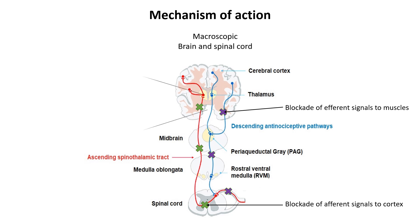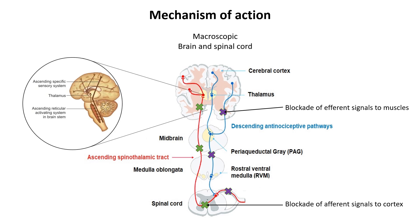Hypnosis and amnesia are mediated at the supraspinal level. Tomographic assessment of regional uptake of glucose in anesthetized volunteers indicates that the thalamus and midbrain reticular formations are more depressed than other regions.